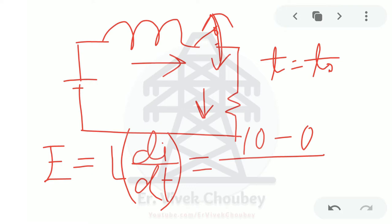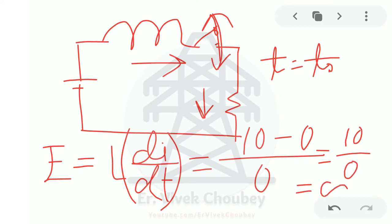Ideally, it takes zero seconds for a switch to go from on to off. So the value of di/dt is 10 divided by 0 — anything divided by zero is infinity. This means the EMF generated across the inductor is effectively infinite, meaning in practice it will be a few kilovolts — a very high voltage spike will be seen.